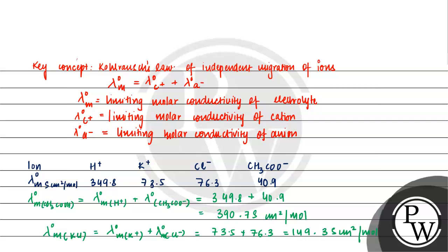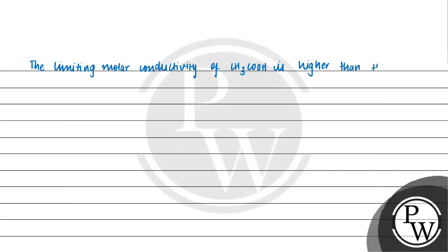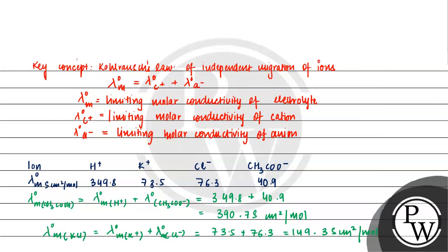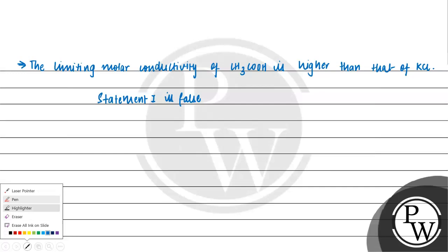We can see that the molar conductivity of CH3COOH (390.7) is greater than the limiting molar conductivity of KCl (149.3). So our statement is opposite to what Statement 1 claimed. Statement 1 claimed that the limiting molar conductivity of KCl is higher compared to CH3COOH, but our calculation shows that the limiting molar conductivity of CH3COOH is higher than that of KCl. Therefore, Statement 1 is false.